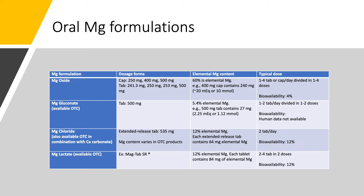By far, the most commonly used magnesium salt is magnesium oxide. We usually prescribe 400 to 800 milligrams twice a day. 60% of the tablet weight is elemental magnesium, so a 400 mg capsule contains 240 mg of elemental magnesium. Bioavailability is very poor. Magnesium gluconate, magnesium chloride, and magnesium lactate are also available over the counter. However, the elemental magnesium content depends on the manufacturer, so always read the bottle. To save time, just remember: magnesium oxide 400 to 800 mg twice a day.